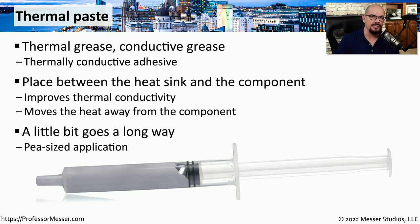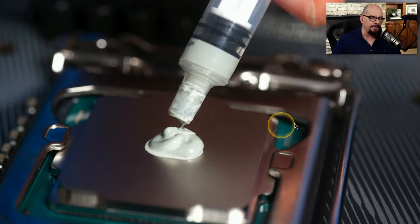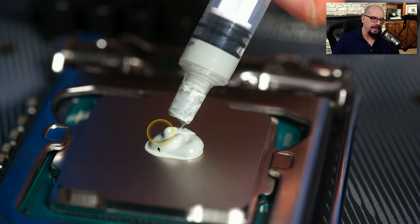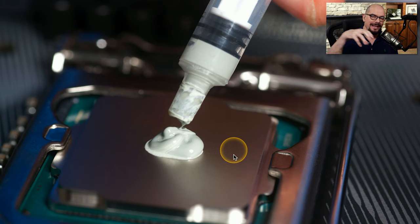It doesn't take a lot of thermal paste to make this connection. We often refer to this as a pea-sized amount of thermal paste to protect something like a CPU. Here's a good example: this is a CPU that has just been installed, and you can see a pea-sized amount of thermal paste being placed in the middle of the CPU. When you add the heat sink to the top, it will spread that out evenly throughout the CPU, making for an evenly distributed thermal connection.